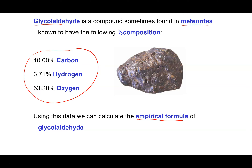In 100 grams of this compound, we would have 40 grams of carbon, 6.71 grams of hydrogen, and 53.28 grams of oxygen. We'd turn those into moles, and once we've got those moles, we would find the simplest mole ratio between those three elements. That would become our empirical formula.